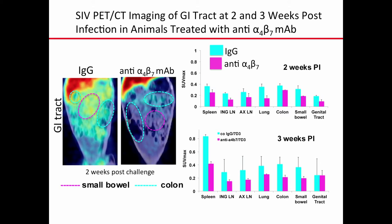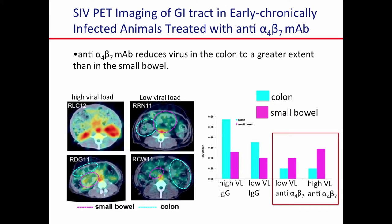The other thing we noticed was that, looking specifically in the gut — now showing cross-sections from similar animals — the anti-alpha 4 beta 7 antibody reduced virus in the colon to a greater extent than in the small bowel. That makes sense because the colon is where the effector sites of the gut are — that's where all the memory cells are. There are also effector sites in the small bowel, but there are also inductive sites there — the Peyer's patches. So we're seeing this pronounced effect where you're actually reducing virus more in the effector sites.